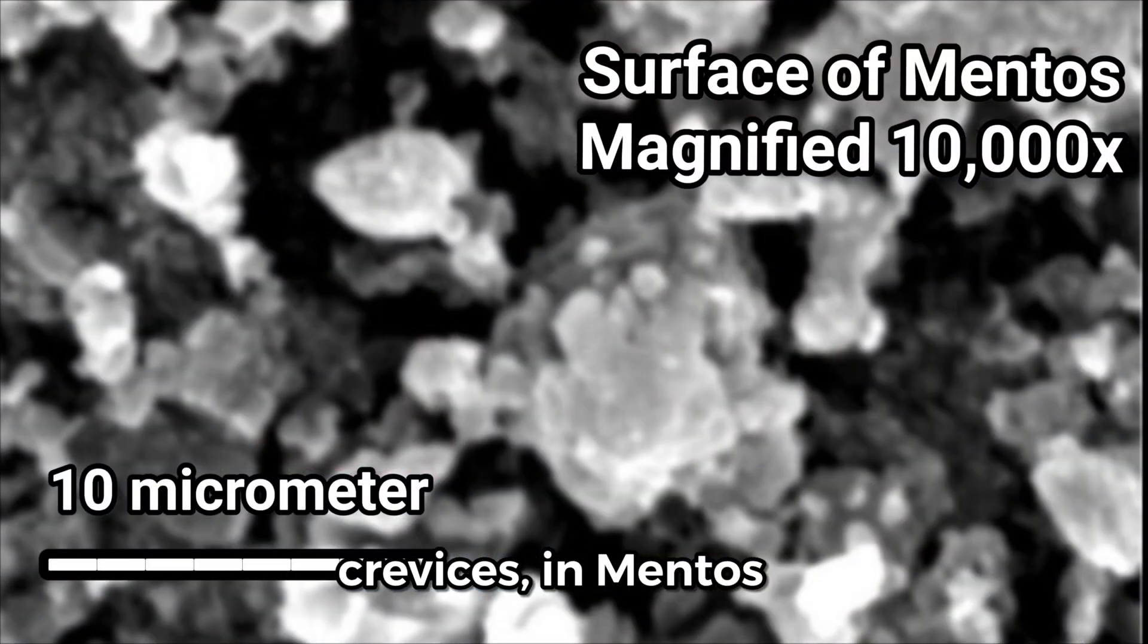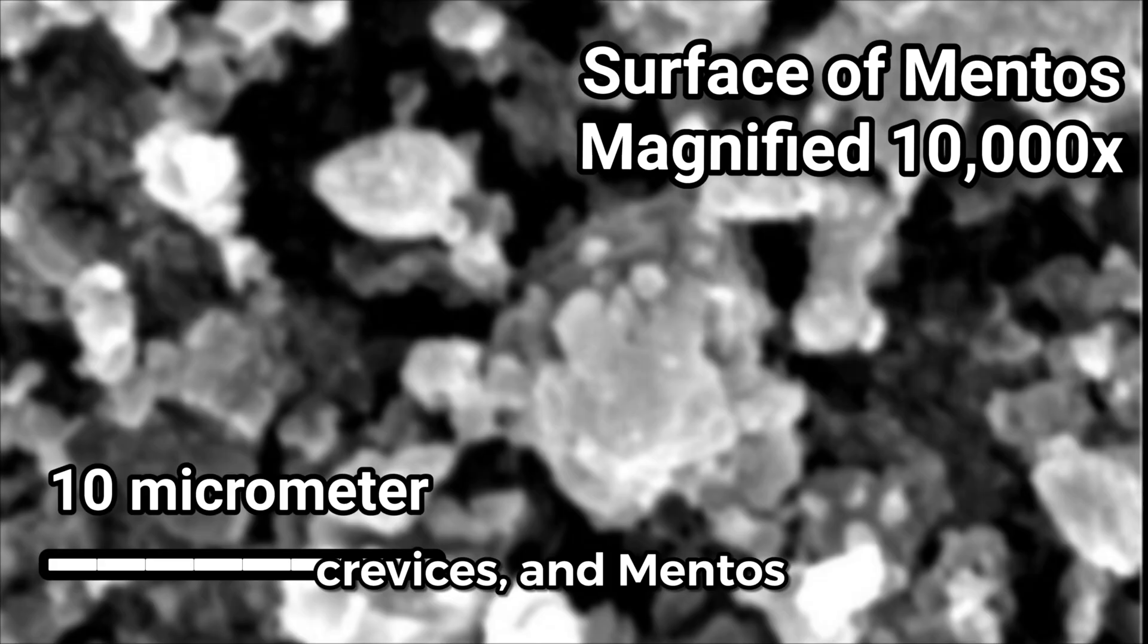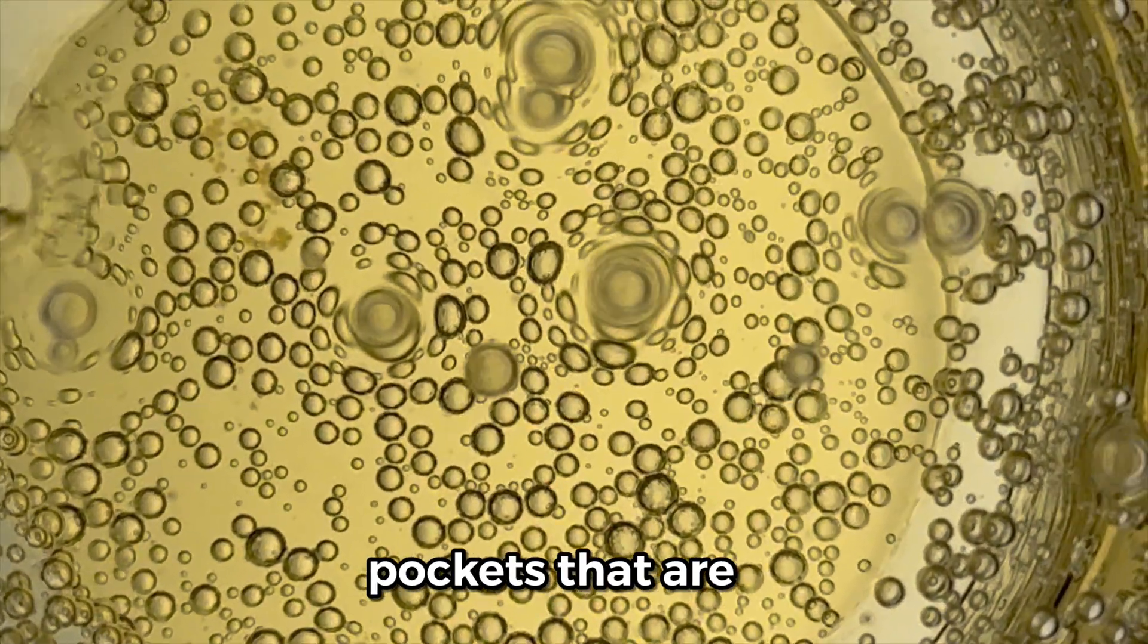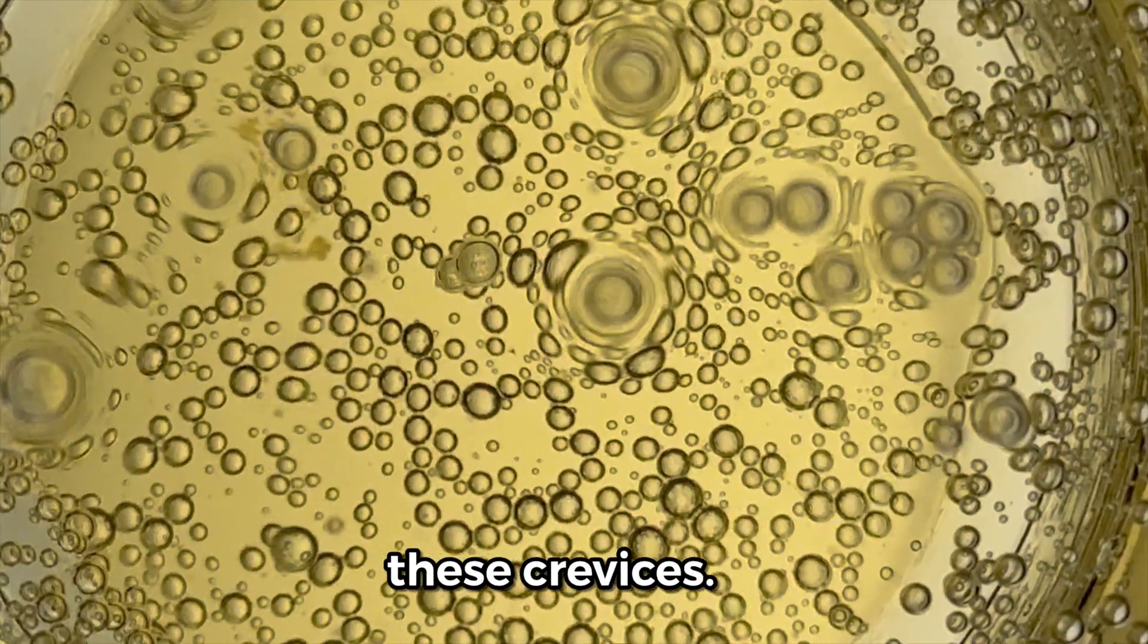So now you know. The true nucleation sites aren't those pits, pockets, and crevices in mentos, candies, fibers, and other things. Instead, bubbles grow and release from air pockets that are already trapped in these crevices.